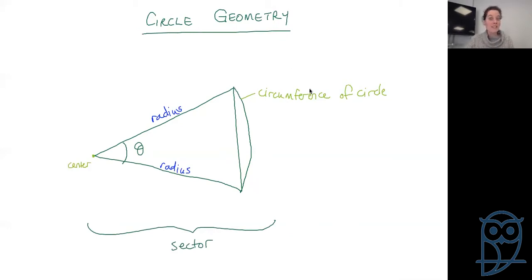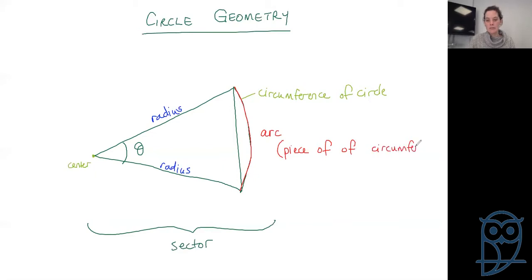Then we have a nice interesting word. This piece of the circumference here is known as an arc — that is just a piece of the circumference. So we can find the arc length, and then we would have the length of that little piece of circumference.